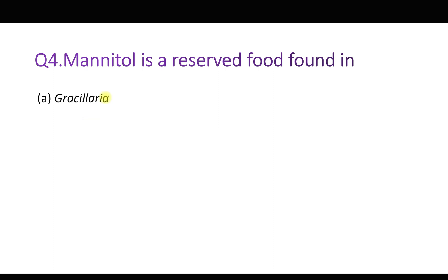Question number four: Mannitol is a reserved food found in which of the following? Options are: Gracilaria, Porphyra, Chara, Fucus. The algae all have reserved food in their body for future requirements. The primary product is usually a polysaccharide, and mannitol is a complex polysaccharide stored in brown algae. The correct answer is D, Fucus. Fucus are brown algae that grow on rocky sea shores.